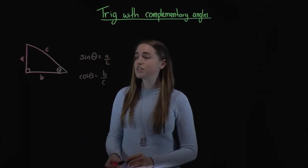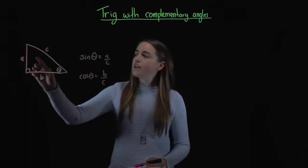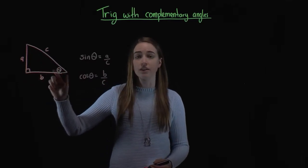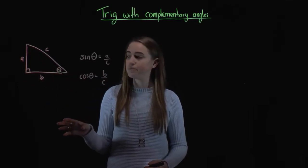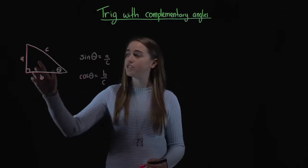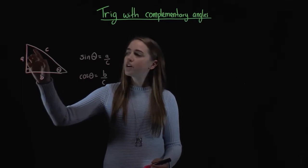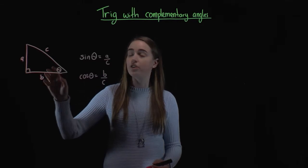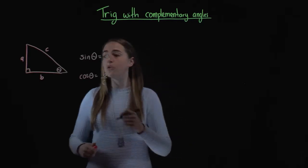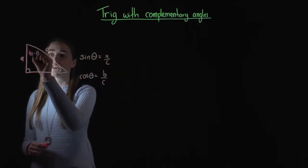Let's have a look at this angle up here instead. To figure out what that is, we know that the angle sum in a triangle is 180 degrees. Now if we already have this 90 degrees here, that leaves us with another 90 degrees to be split between these two angles. So if we're trying to figure out what this angle is, we can go 90 minus whatever this one is. So this angle in here, we can call that 90 minus theta.